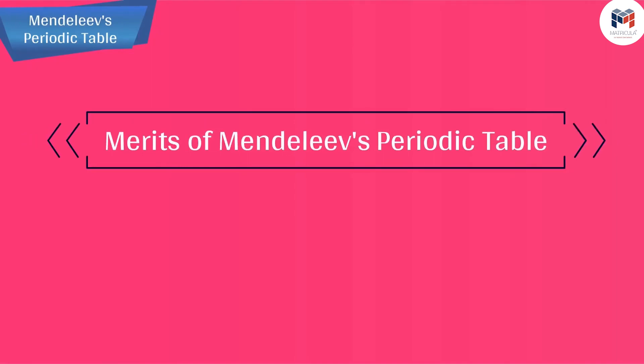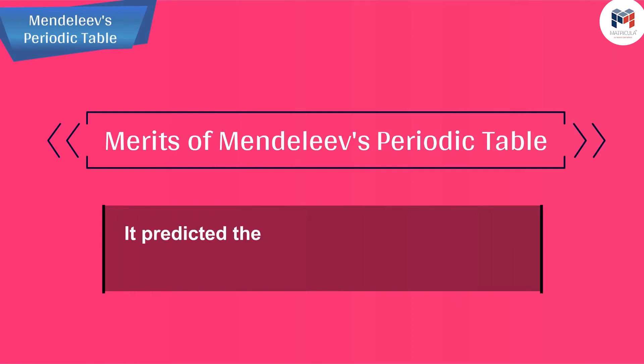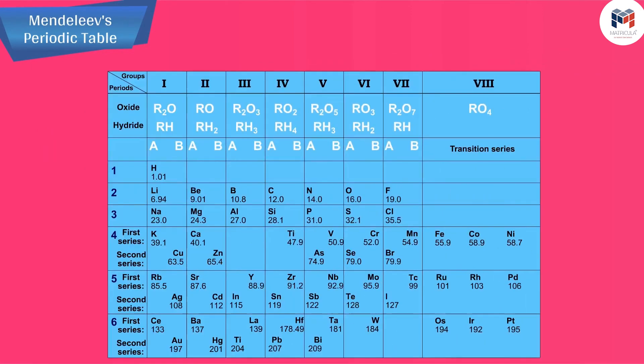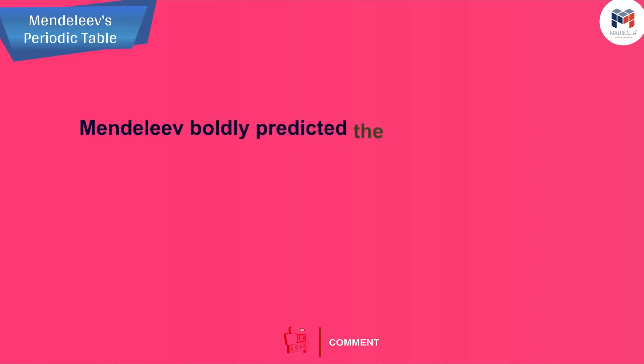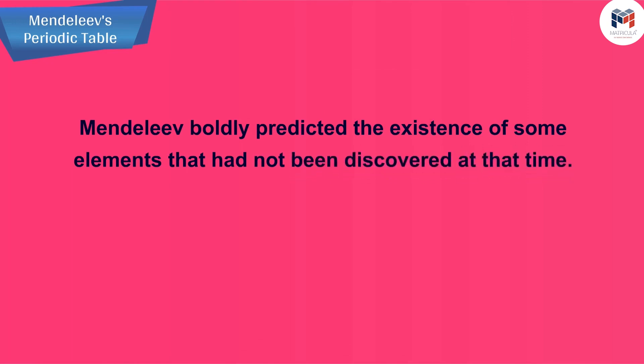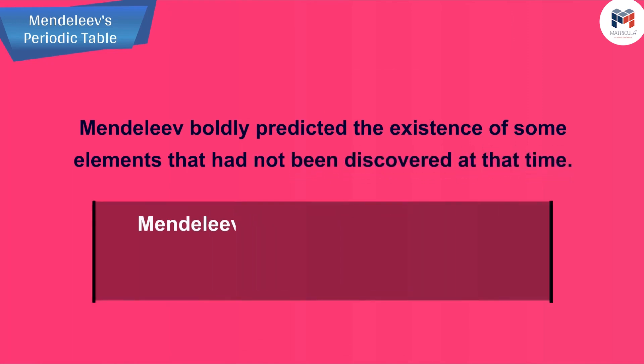We will now discuss the merits of Mendeleev's periodic table. It predicted the existence of some elements that had not been discovered at that time. Mendeleev left some gaps in his periodic table. Instead of looking upon these gaps as defects, Mendeleev boldly predicted the existence of some elements that had not been discovered at that time.